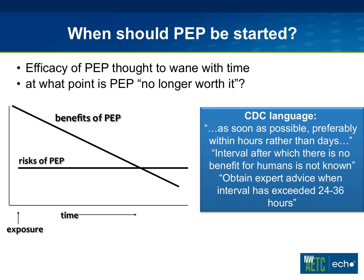Thinking theoretically about timing, the risks of PEP are pretty much constant — these drugs have certain toxicities that are constant through time. We know from animal experiments that the benefits of PEP decrease over time. The real question is when these lines cross and when it's no longer worth it to start PEP. The CDC guidance says it should be as soon as possible, preferably within hours rather than days. That AZT trial was able to start PEP within four hours, which has important implications for systems of care — in a hospital or clinic setting, that means going to the ER right away to get the first dose in immediately and making decisions later.